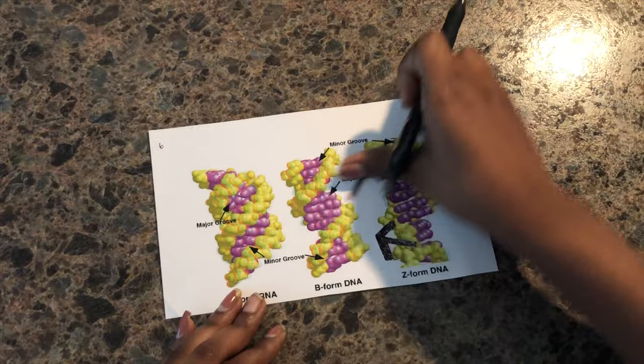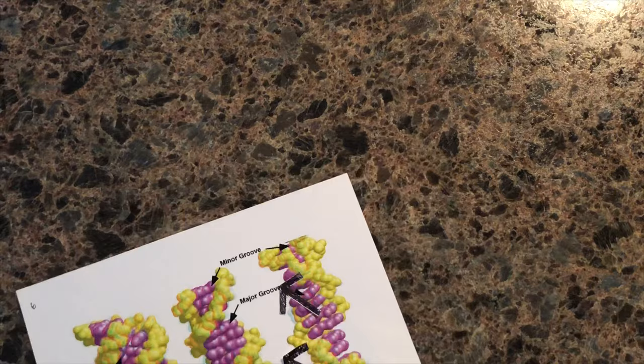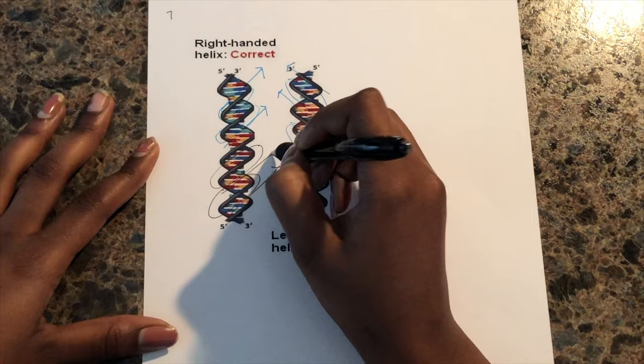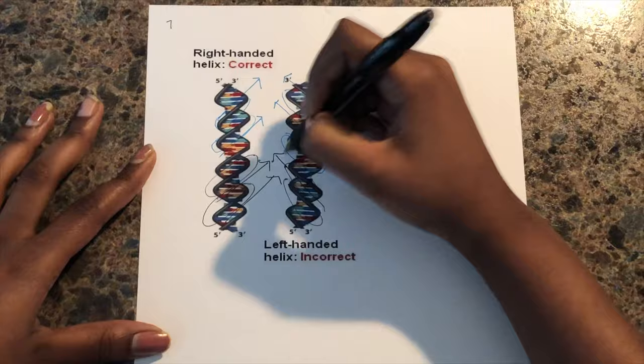The arrow technique is a good technique to use, but a different technique we can use is picking out which coils pop out at us and seeing which way it is coiling up. For example, this coil and this coil are popping out at us. We can see that it curves up to the right. This coil and this coil is popping out at us, and we see that it curves up to the left.